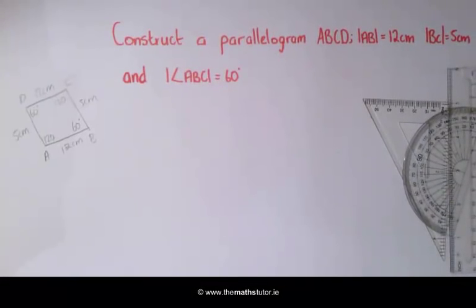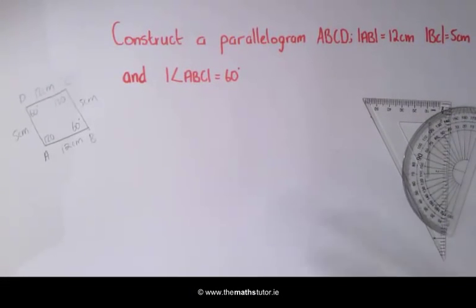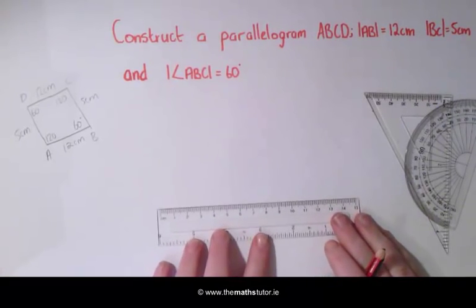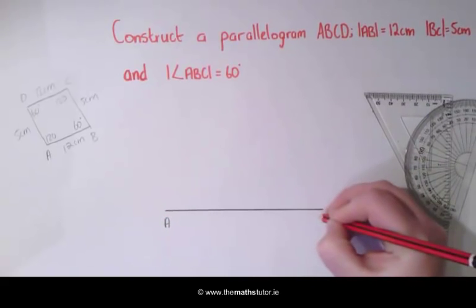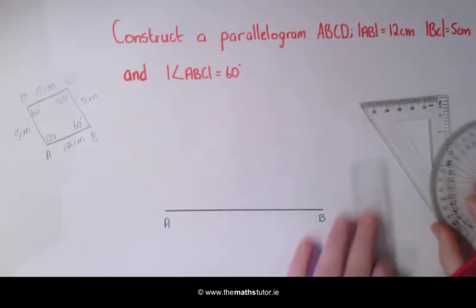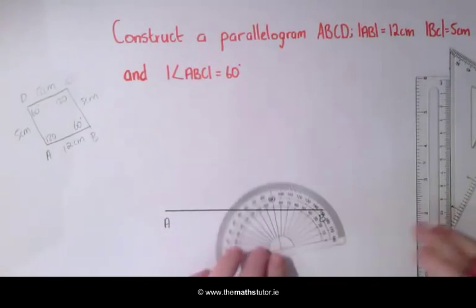The first thing we are going to do is draw the horizontal line AB which is 12 cm. We are then going to draw an angle of 60 degrees at B.